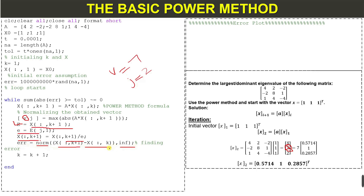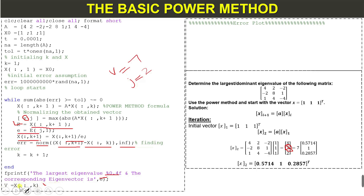Next we print the largest eigenvalue e and also print the largest eigenvector: v equals x of k. Now in this lecture, our basic motive is how we can plot this error.